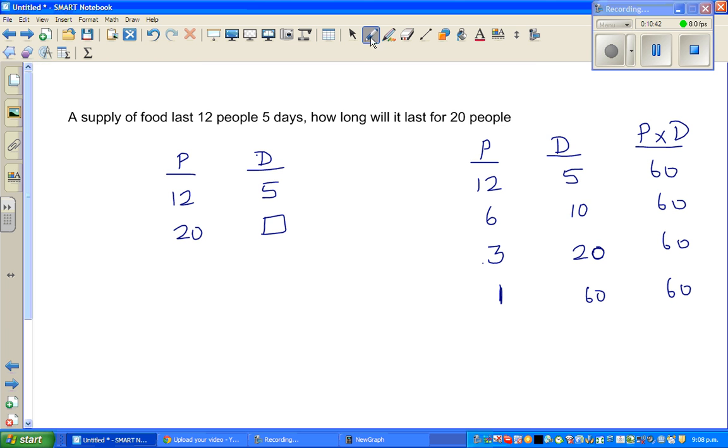So using the same logic, here this is 12 times 5 is 60. So you are thinking 20 times what is 60? Well that's easy. 20 times 3 is 60. So for 20 people, it will last for 3 days. I'll do a few more examples in my next video. See you in the next video.